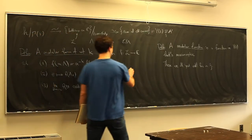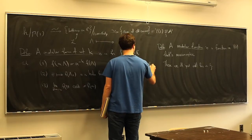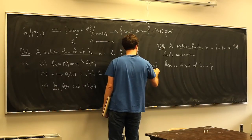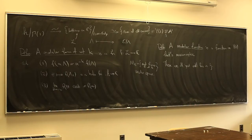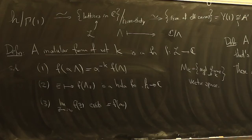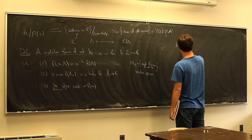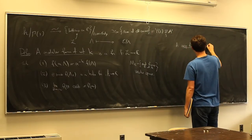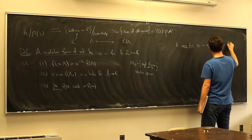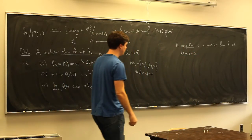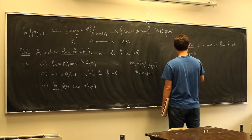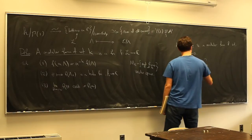I'll write M_k for the space of these modular forms — it's a vector space. There's also a variant called a cusp form: it's just a modular form that vanishes at the cusp, so f(∞) = 0. I'll write S_k for the space of cusp forms. It's also a vector space — a subspace of M_k.